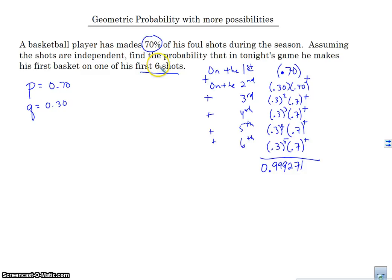Okay, so 0.999271. Alright, well, he's definitely, definitely, it seems like he's going to make his first shot on one of the first six shots. Now, how do we do this in the calculator to make this? We don't have to do this a long time. Because what if I ask the question, what is the probability that he makes his first basket on the first 20 shots? Well, I don't want to have to write this all out to the 20th time. Okay, I want to be able to do this a little bit easier. So I'm going to use the calculator to show me how to do that for me.